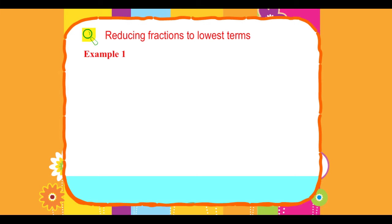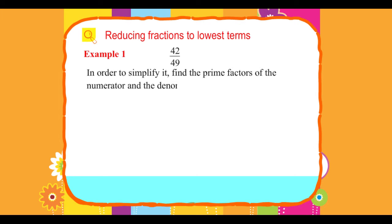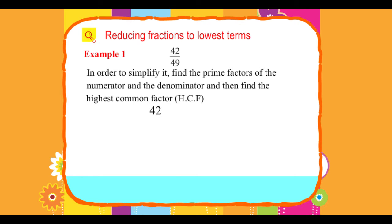Example 1: Let us take the fraction 42 upon 49. In order to simplify it, find the prime factors of the numerator and the denominator and then find the highest common factor, or HCF. 42 equals 2 into 3 into 7. 49 equals 7 into 7. The highest common factor equals 7.